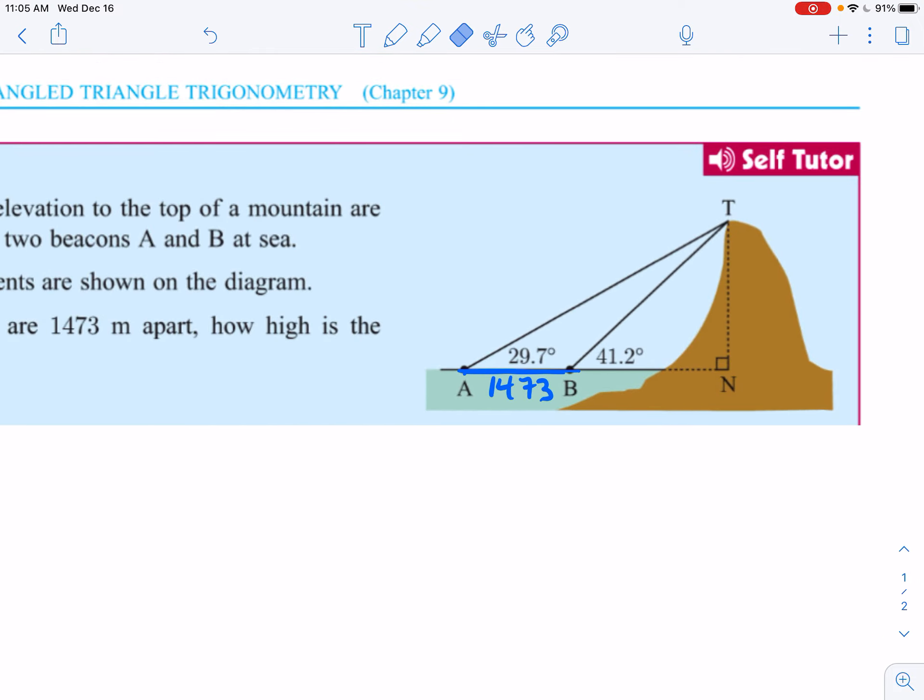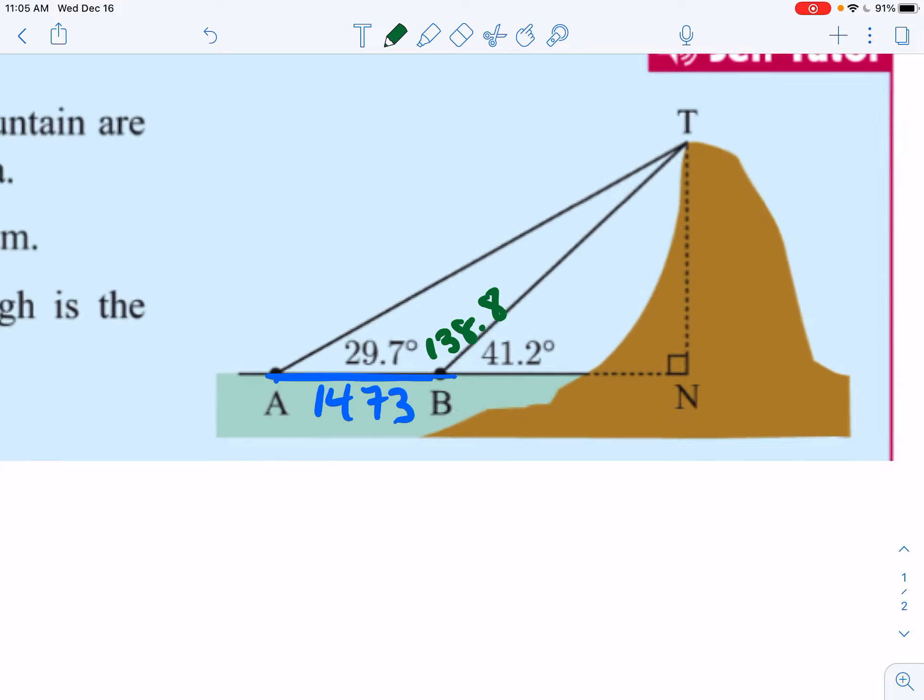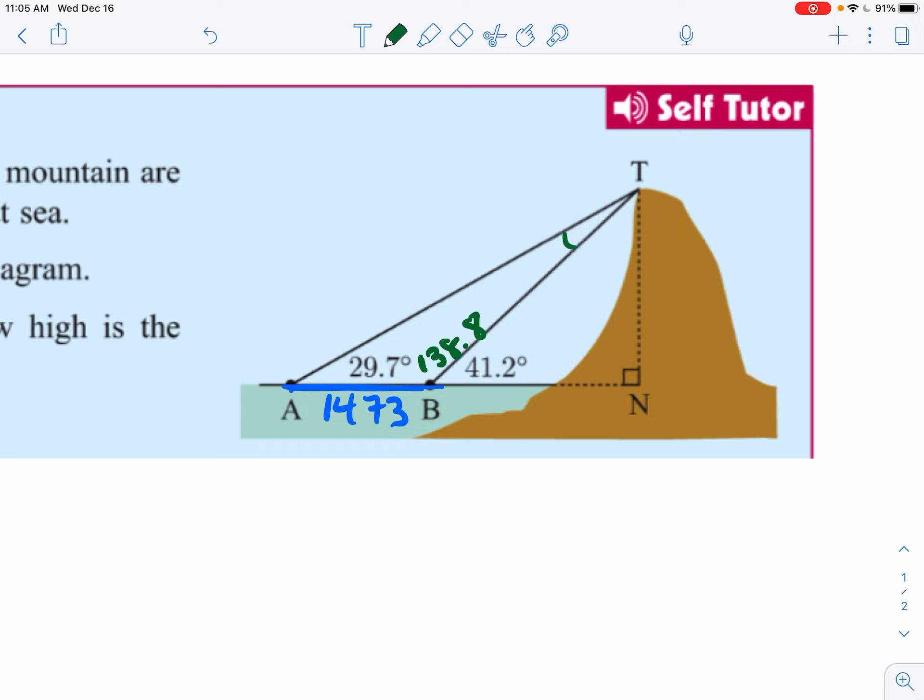Okay, so here is what I see. First of all, I know that if this is 41.2 degrees, then I know that this angle would be, well, 41 and 140 equals 180, so that's 138.8. Therefore, I need to find, I want to find this little angle up here. So, 180 minus 29.7 minus 138.8. That's not the only way I could have gotten this, but this gives us an angle up here of 11.5 degrees.